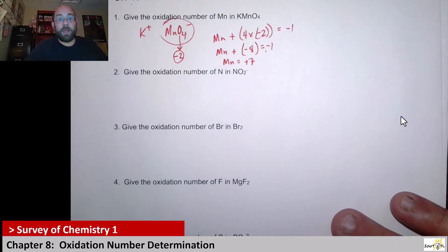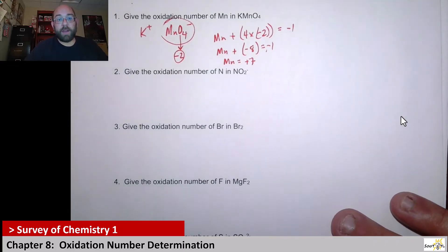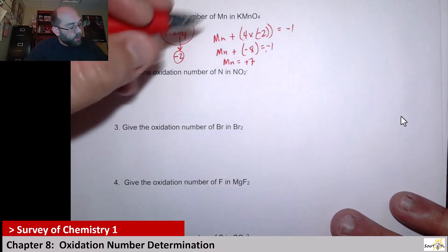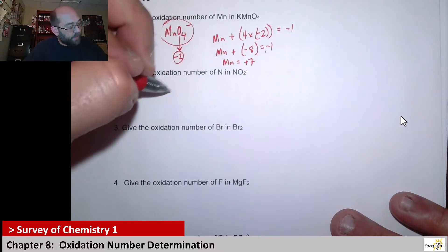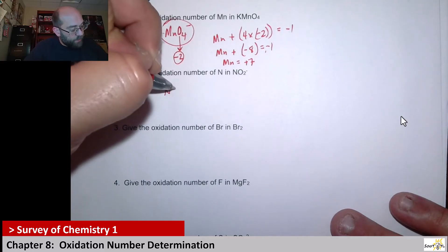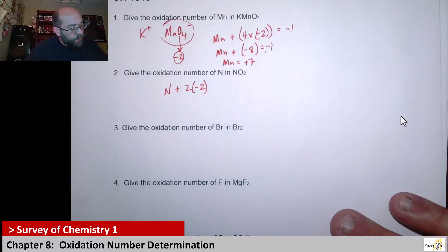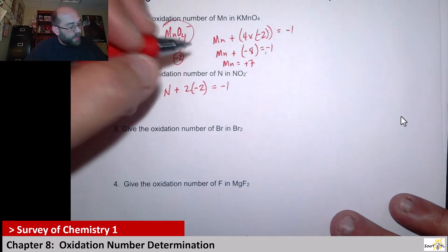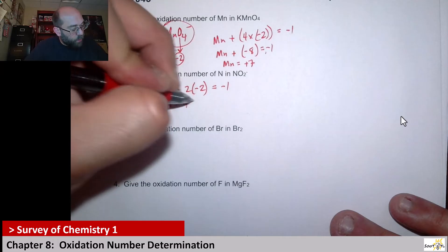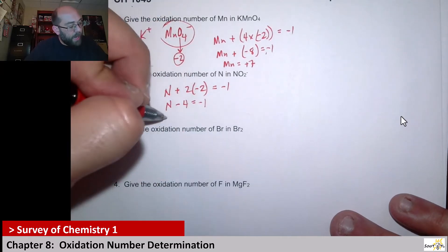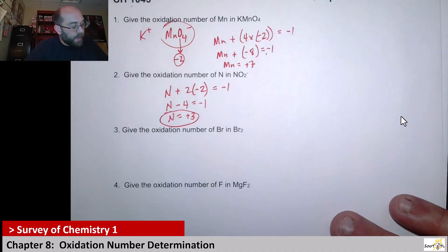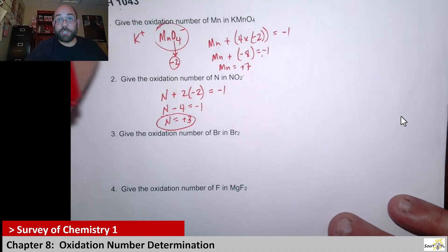Next up, we want the oxidation number of nitrogen in NO2-, another polyatomic ion. In this case, this is nitrite, so we're looking at, yet again, oxygen has a negative two. So nitrogen plus two of these negative twos should give us an overall charge of negative one. That means nitrogen minus four equals negative one, aka nitrogen equals positive three.